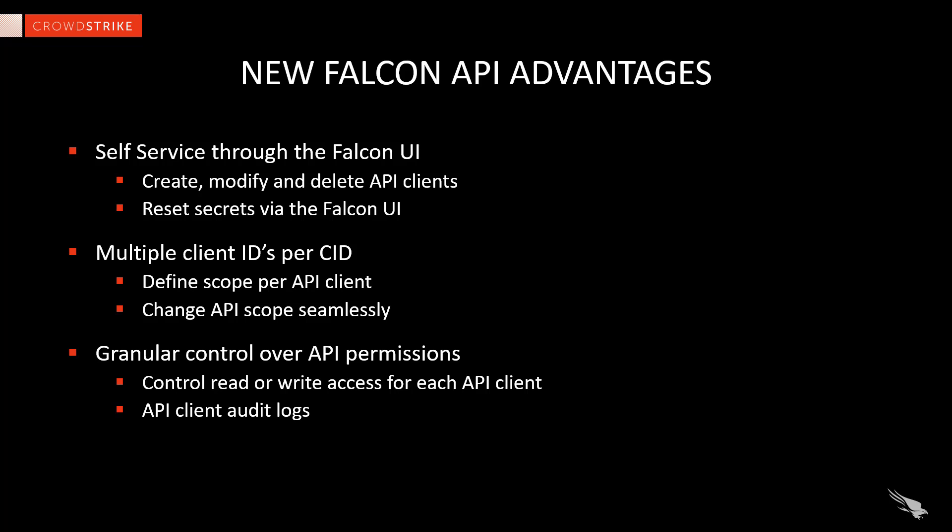Next, it is important that customers are able to maintain tight controls over API permissions. In addition to defining the API scope, there is the ability to control read and write access separately for each of the APIs. The Falcon UI also provides audit logs, including a timestamp and username associated with any changes to the API clients. And finally, OAuth 2 gives CrowdStrike the ability to quickly add new APIs in the coming months. The Containment API is just one example of the new functionality that will be introduced.